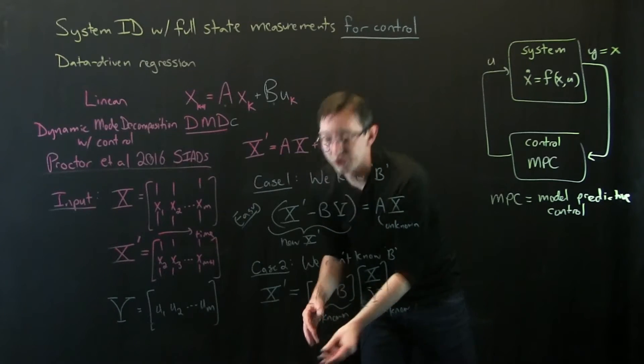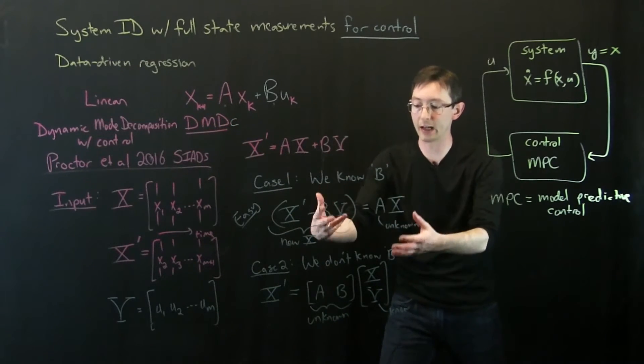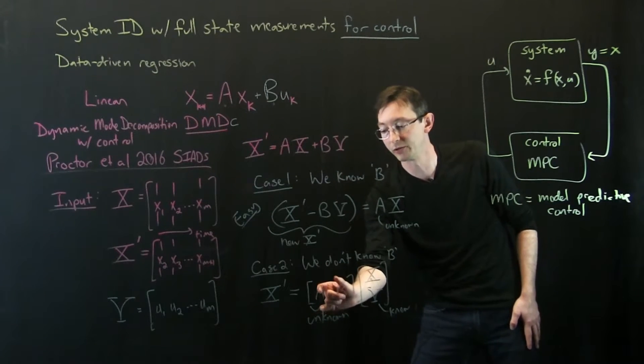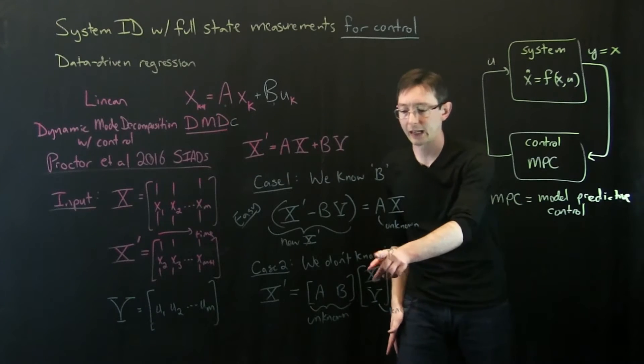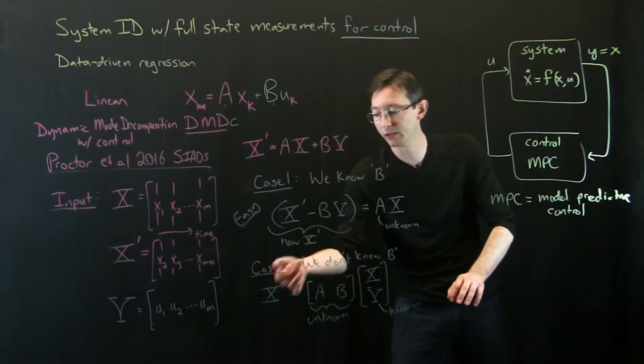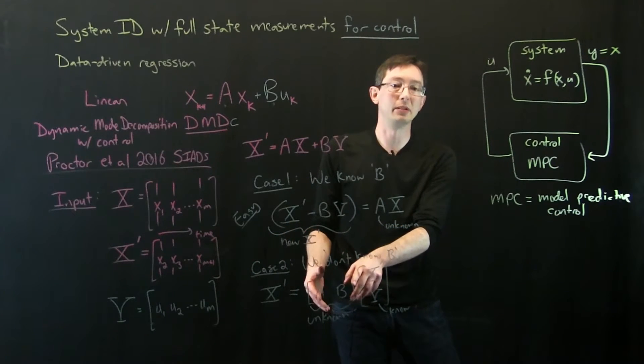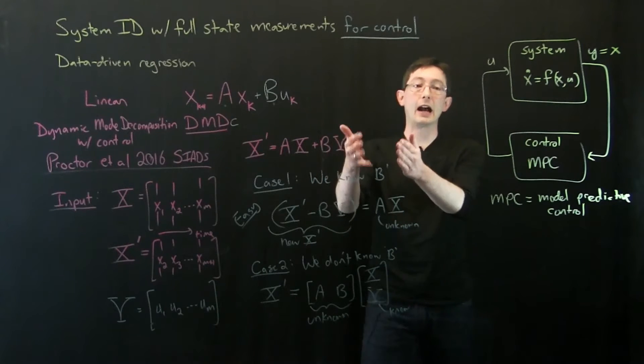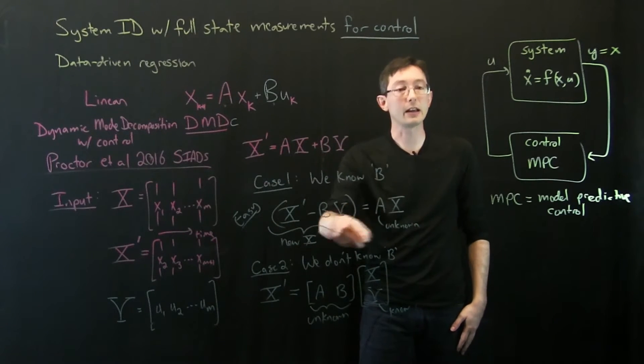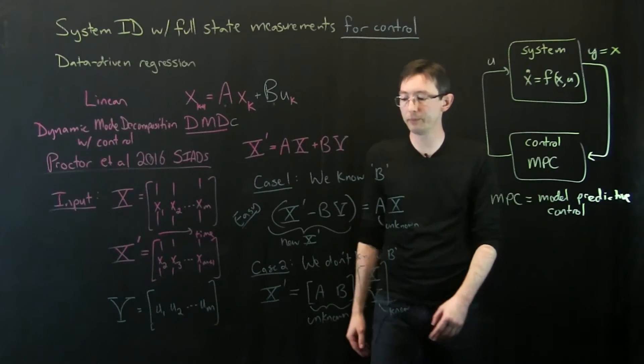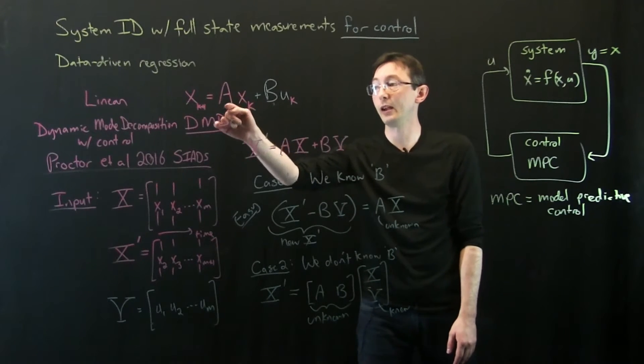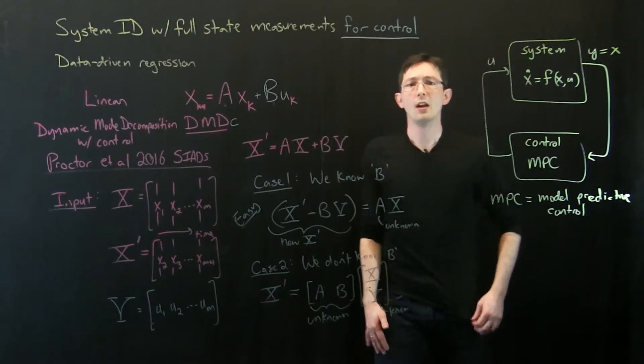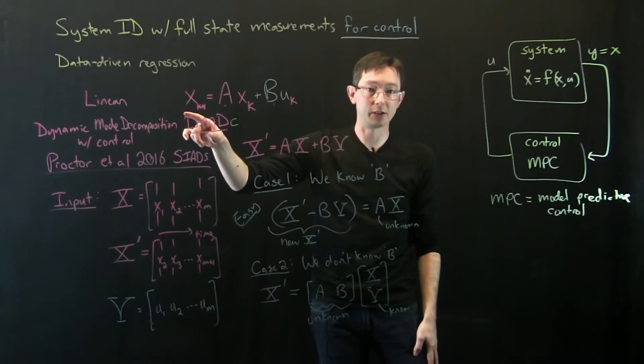And then essentially, he has a procedure where you do dynamic mode decomposition. You run the dynamic mode decomposition algorithm on this framework, and you simultaneously using data-driven regression solve for this big matrix that contains both A and B. This involves taking a singular value decomposition of this matrix, doing a pseudo inverse, and breaking up the pieces until you get an A matrix and a B matrix. So there's a little bit more math involved here. You can read about it in this 2016 SIAM journal paper. But basically, in either case, if I know B, then it's very easy to solve for the dynamics A, kind of this low order representation. If I don't know B, I have to simultaneously solve for A and B, and then I can do the regular DMD trick of finding the leading eigenvalues and eigenvectors of A.